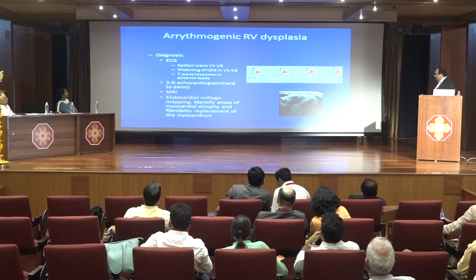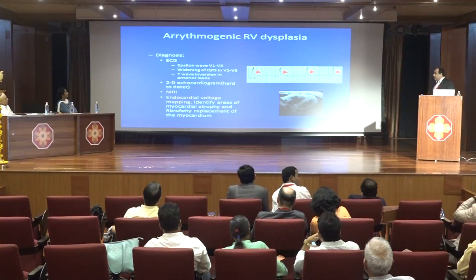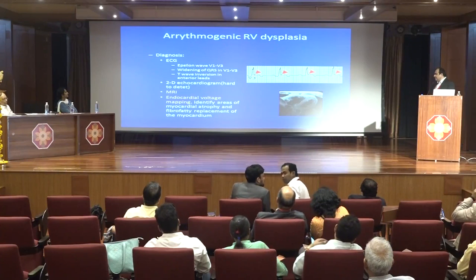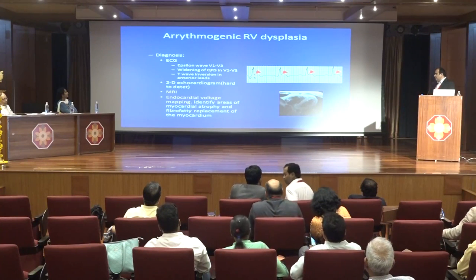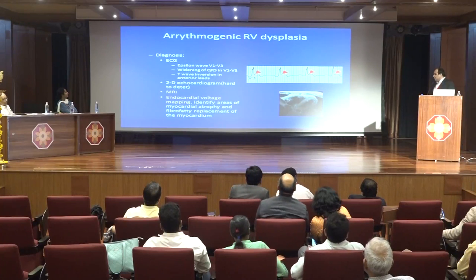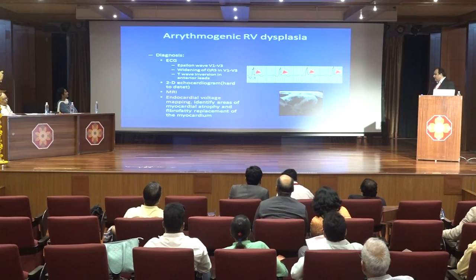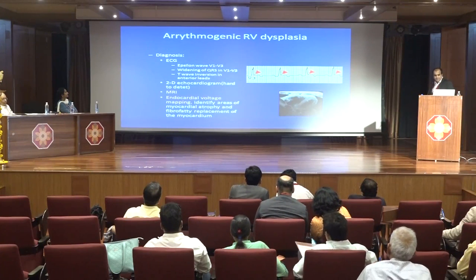It is difficult to diagnose on 2D echocardiography, so MRI is required. Another investigation that can be done is endocardial voltage mapping, which can identify areas of myocardial atrophy and fibrofatty replacement of the myocardium.